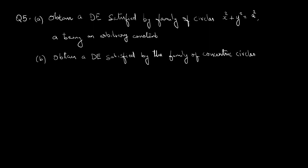Question 5. It has two parts. Part a: obtain a differential equation satisfied by the family of circles x squared plus y squared equals a squared, where a is an arbitrary constant. And part b: obtain a differential equation satisfied by the family of concentric circles.